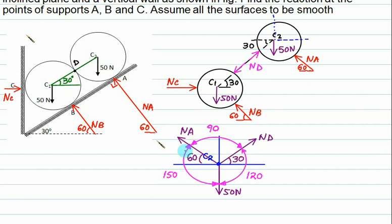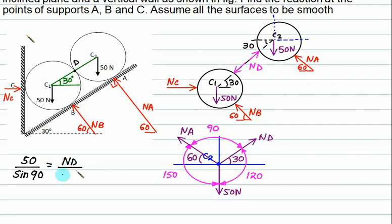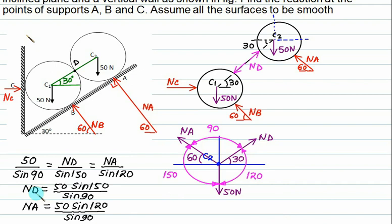Applying Lami's theorem: the 50 N force is proportional to sine of the angle between Na and Nd, which is sine 90°. For Nd, the angle between 50 N and Na is 150°. For Na, the angle between Nd and 50 N is 120°. Solving gives Nd equals 25 N.